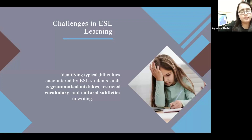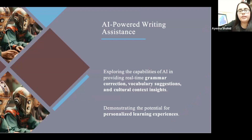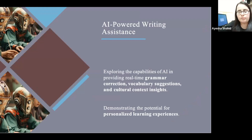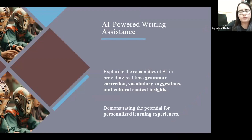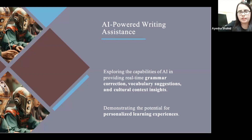We also have different cultural disabilities which are quite challenging when it comes to writing. AI-powered writing assistance can explore capabilities in providing real-time grammar correction, enhance vocabulary, and improve cultural context insights as well. Certain aspects of language are used in one culture and certain in another, so culture plays a very important part in writing.